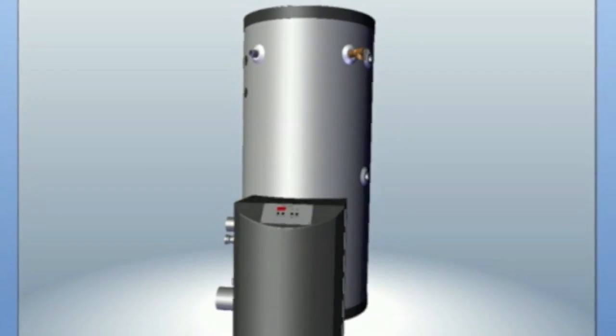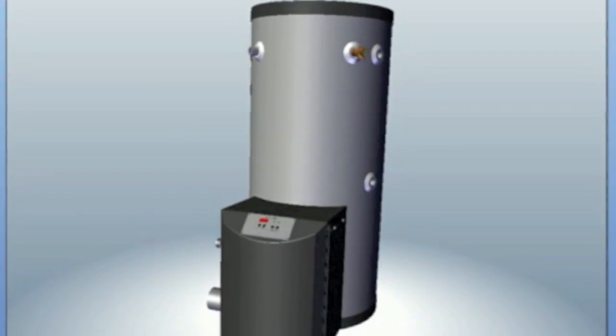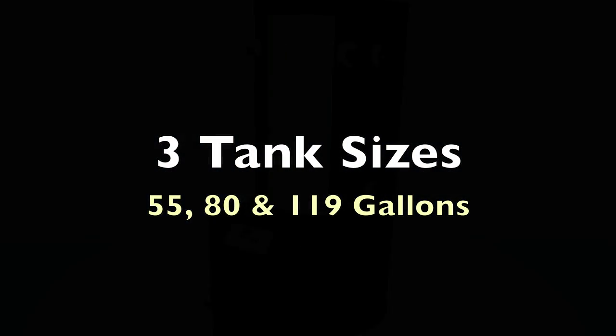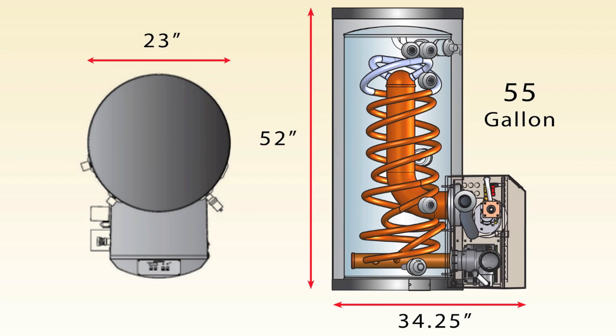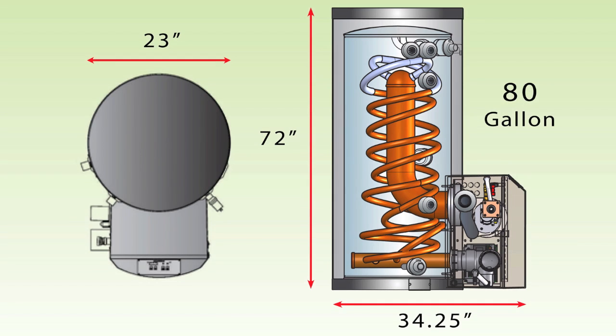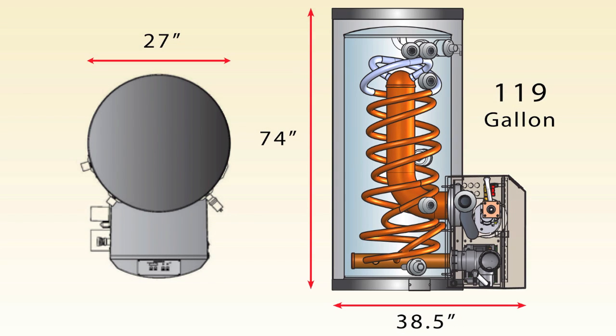Now, let's take a closer look at this exciting new product. HTP offers the Phoenix Water Heater in three sizes: a 55-gallon, which has a diameter of 23 inches and is 52 inches tall; an 80-gallon, which is 23 inches in diameter and is 72 inches tall; and finally, the 119-gallon tank that is 27 inches in diameter and is 74 inches tall.